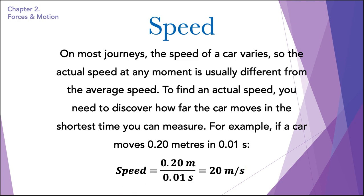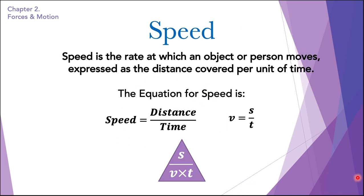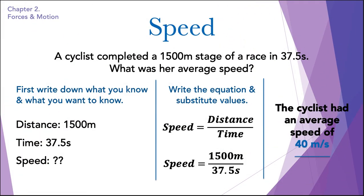Now that we've understood the equation of speed, let's do some questions. A cyclist completed a 1500-meter stage of a race in 37.5 seconds. What was her average speed? In this question we are given the distance and the time. The right and organized way of doing an equation is: first, write down what we know and what we want to know. We know the distance is 1500 meters and the time is 37.5 seconds. Speed is unknown.